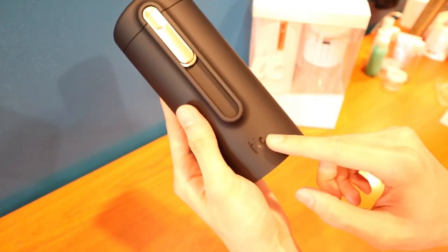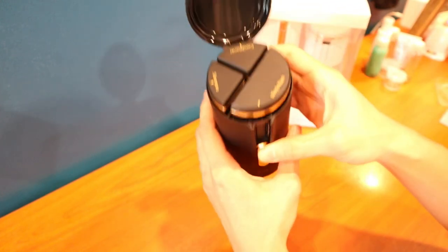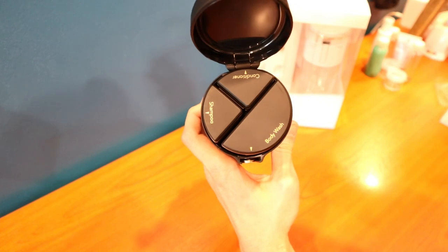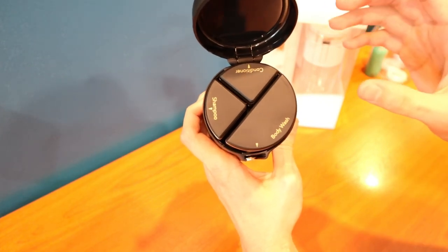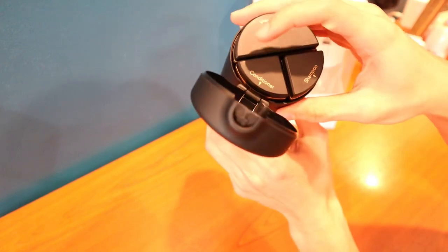You've got the tick logo at the bottom and this is where you slide to reveal all the contents inside. So in this setup, we've got three bottles. They've already labeled it for us. We've got body wash, shampoo and conditioner.